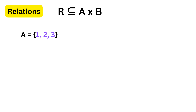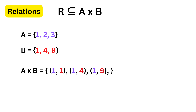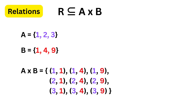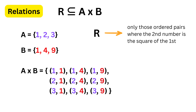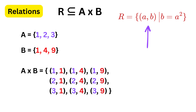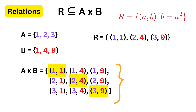Imagine set A contains the numbers 1, 2, and 3, and set B contains the numbers 1, 4, and 9. The Cartesian product will be the complete list of all possible ordered pairs formed by taking the first number from set A and the second number from set B. From this complete list, suppose we now define a relation by choosing only those ordered pairs where the second number is the square of the first. In set builder form, we write this relation R as {(a, b) | b = a²}, selecting 1 comma 1, 2 comma 4, and 3 comma 9, and ignoring all other pairs.